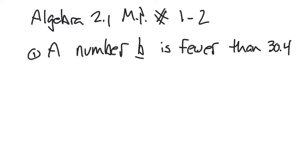So let's take a look. Let's start out with B. There's our number B, and it's less than 30.4. So whatever B is, B is less than 30.4.